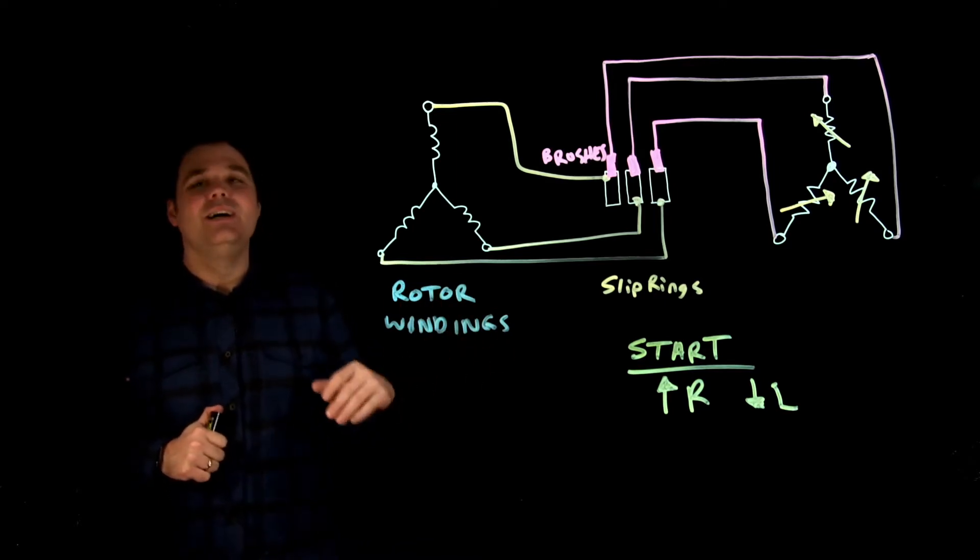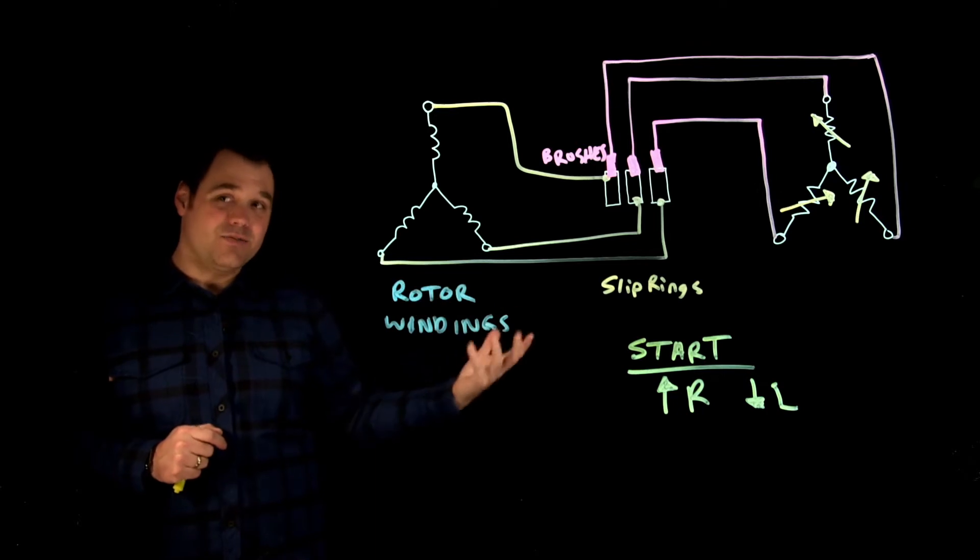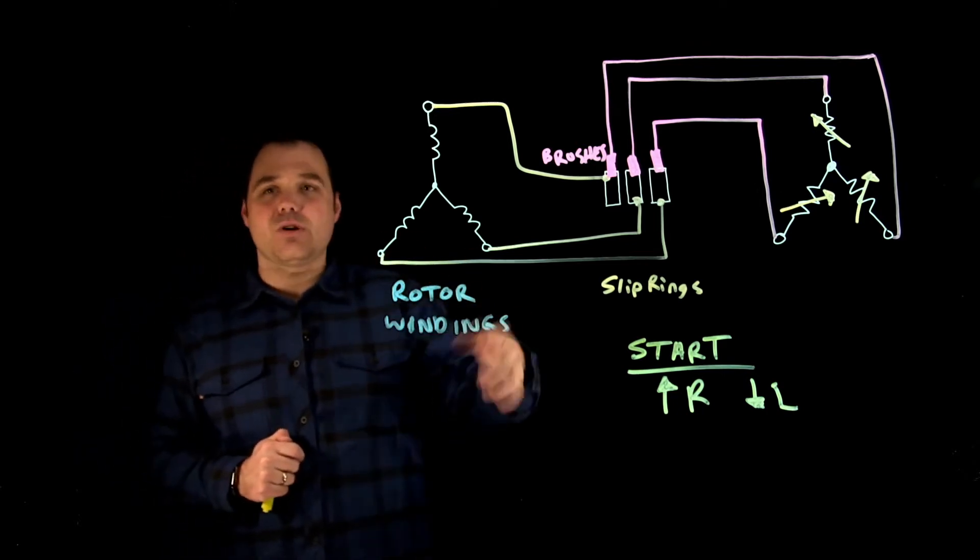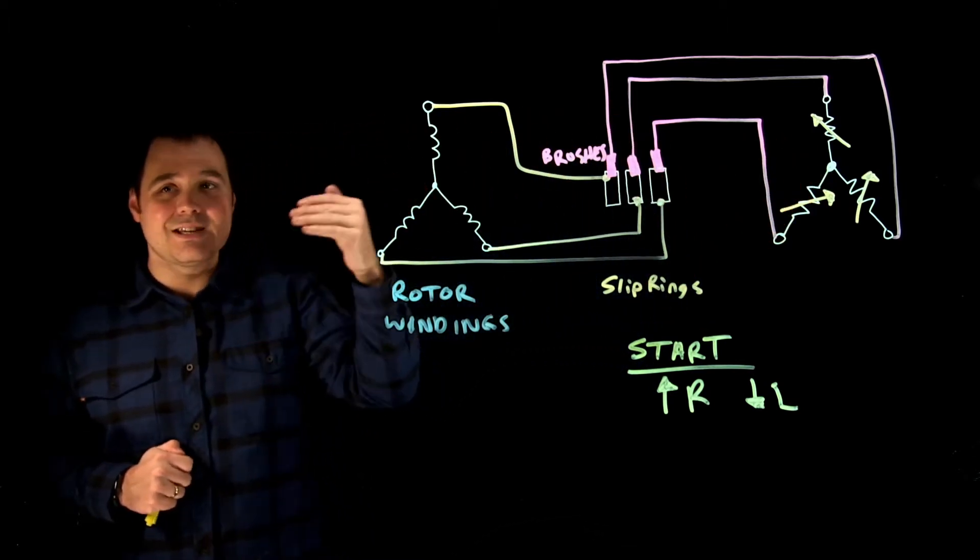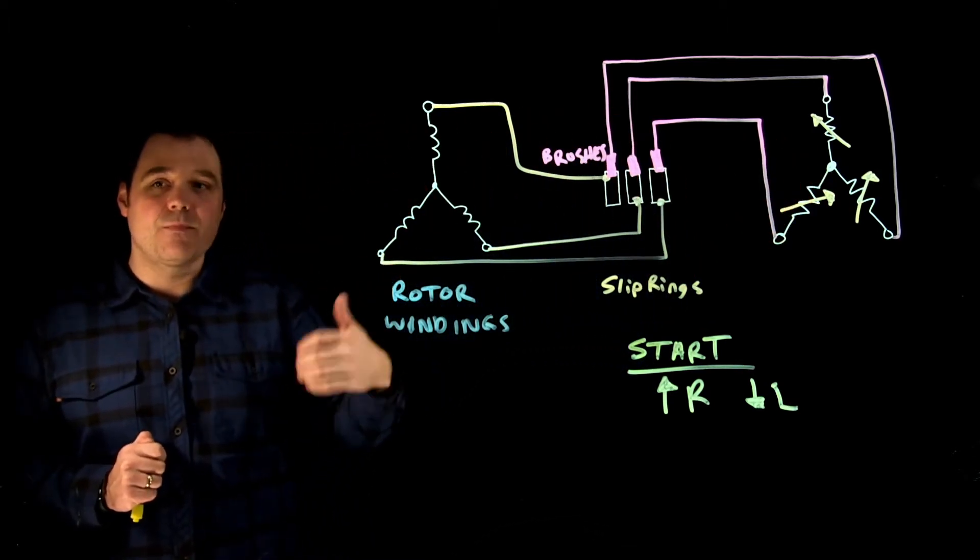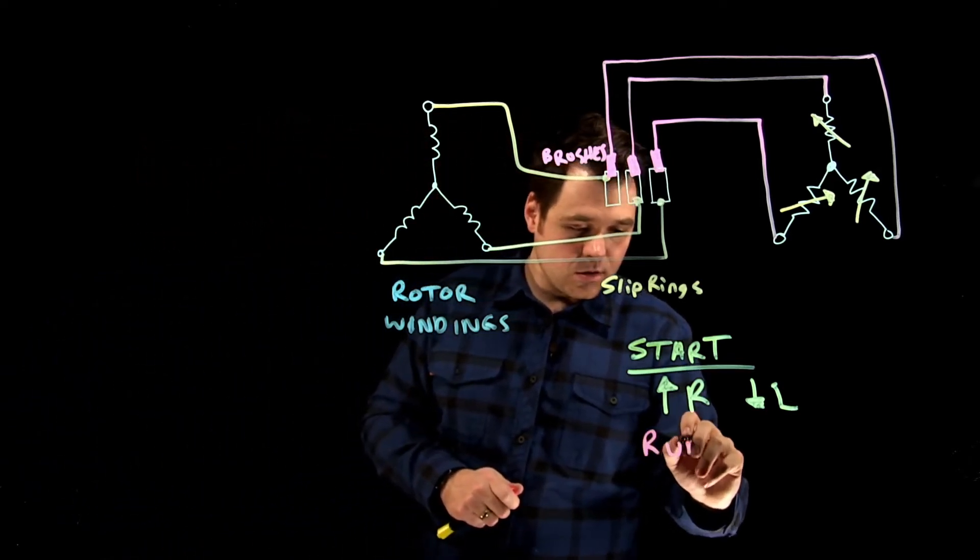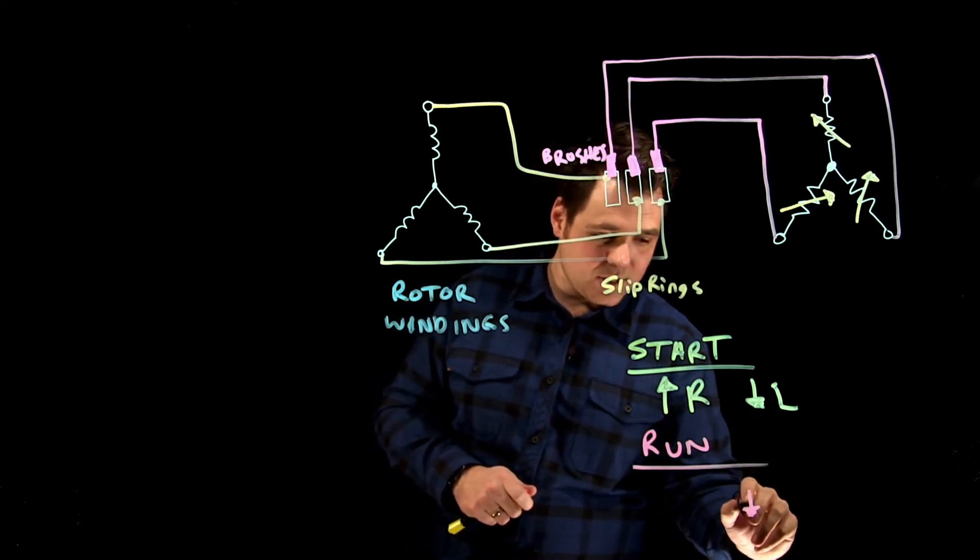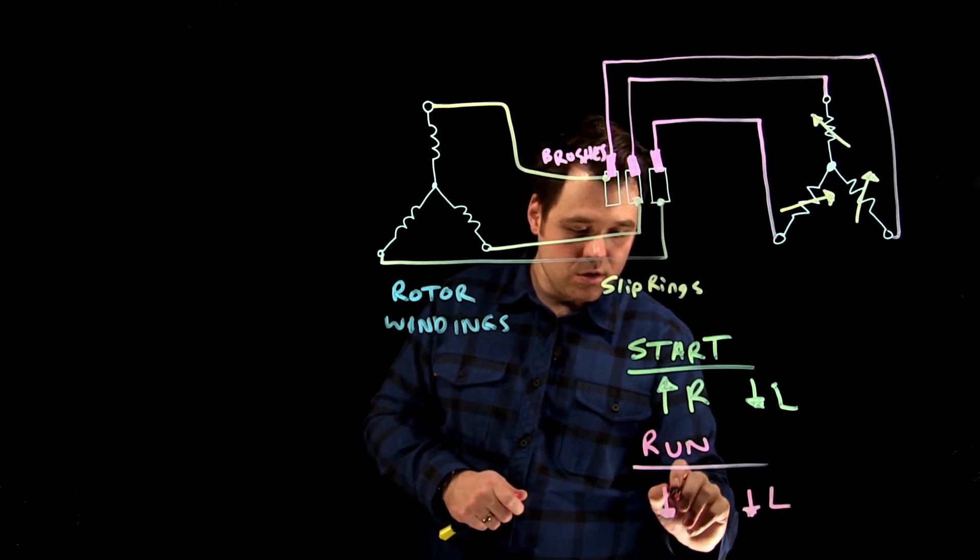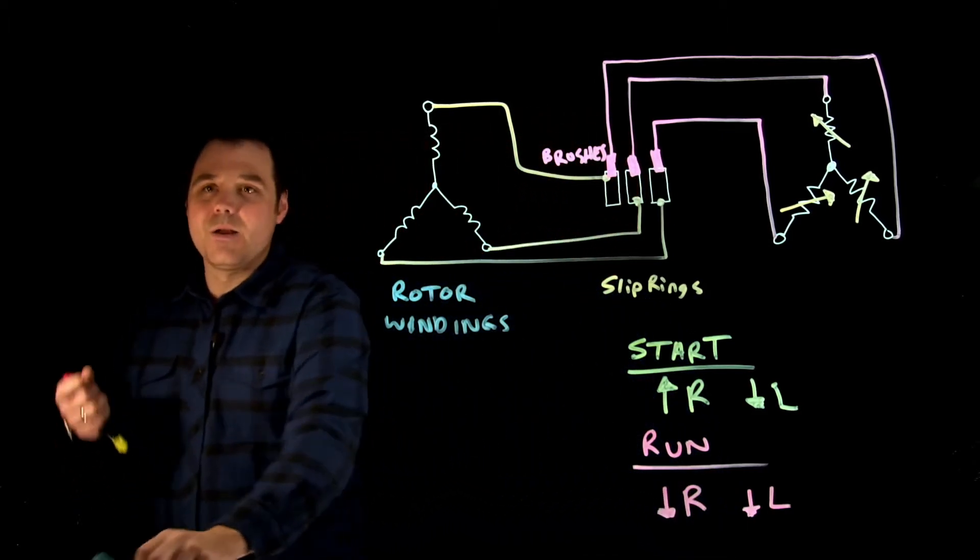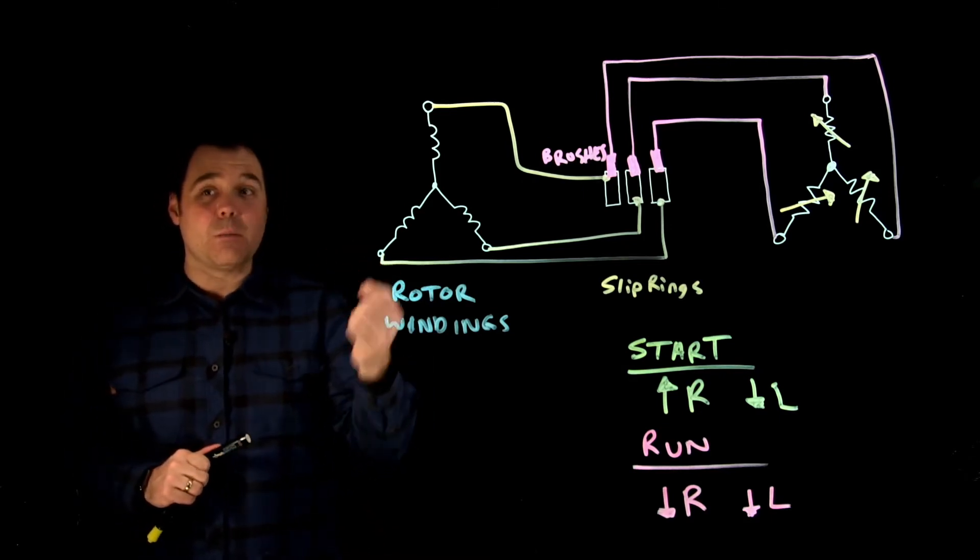The problem normally with the D is that it's very inefficient at later on because of that high resistance. But as this motor starts to spin, what we do is we start to adjust that resistance and we lower the resistance as the motor starts spinning. So as we lower the resistance, what happens is at run, we still have a low inductance. But now we have a low resistance.